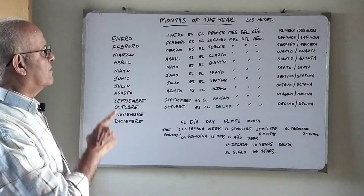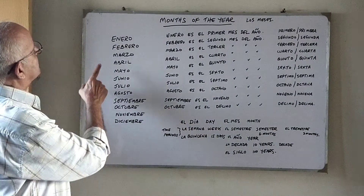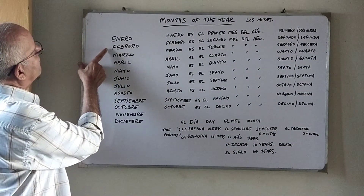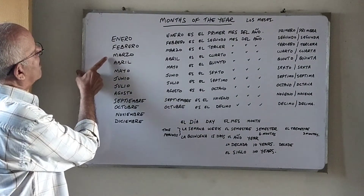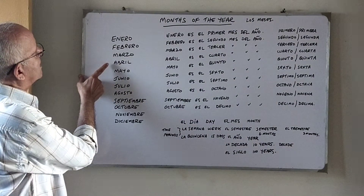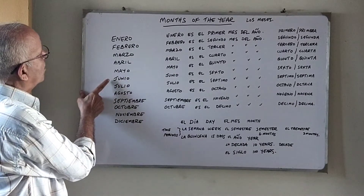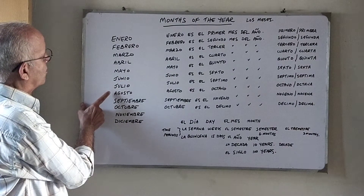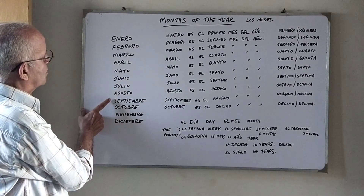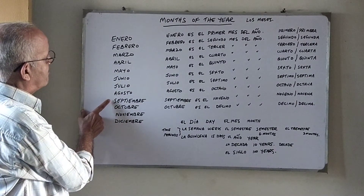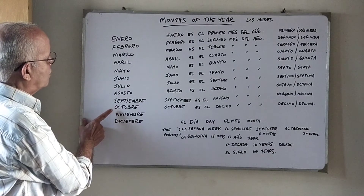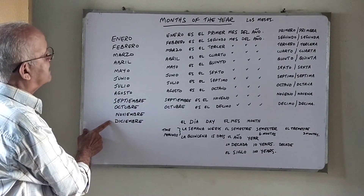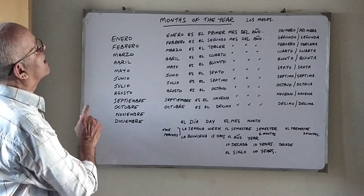A quick recap of the months: Enero, Febrero, Marzo, Abril, Mayo, Junio, Julio, Agosto, Septiembre, Octubre, Noviembre, Diciembre.